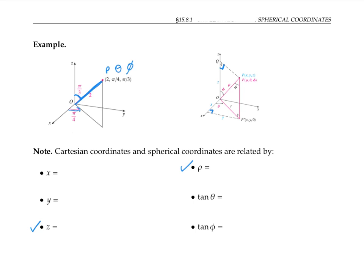Starting with rho: rho represents the distance between the origin and the point P, and therefore this distance is given by the square root of x squared plus y squared plus z squared. To find z in terms of rho, theta, and phi: z is the length of one leg of a right triangle whose hypotenuse has length rho. Since the angle named in this triangle is phi, and z is the length of the side adjacent to phi, cosine of phi equals adjacent over hypotenuse, that's z over rho. Therefore, z is given by rho cosine phi.